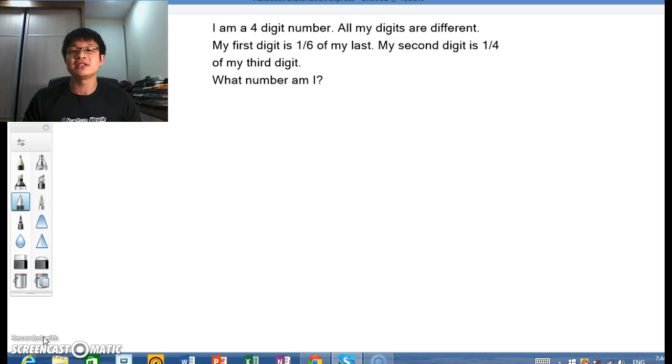I have a four-digit number. All my digits are different. My first digit is one-sixth of my last. My second digit is one-quarter of my third. What number am I?